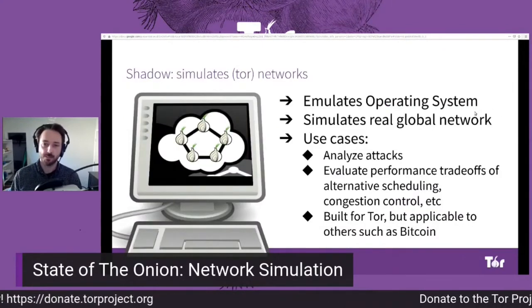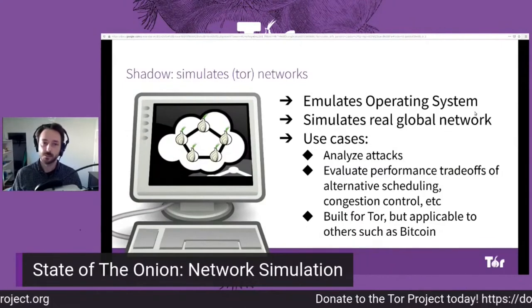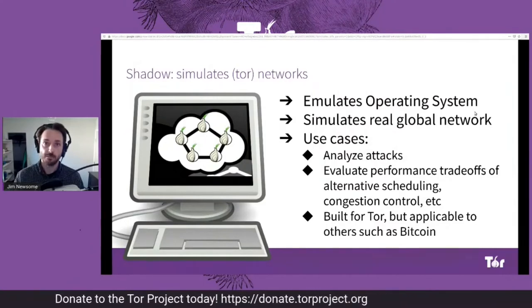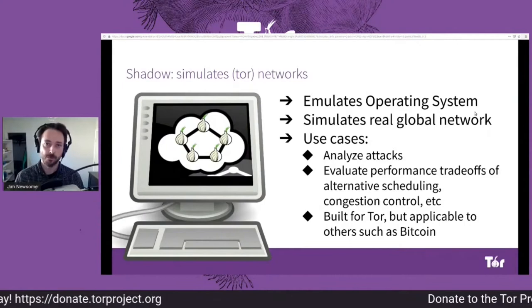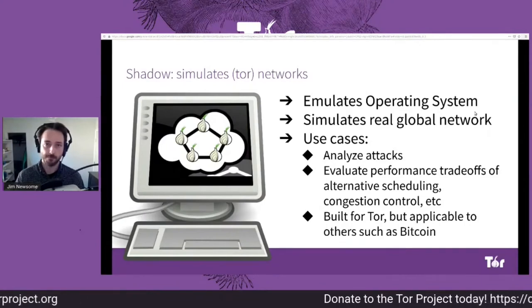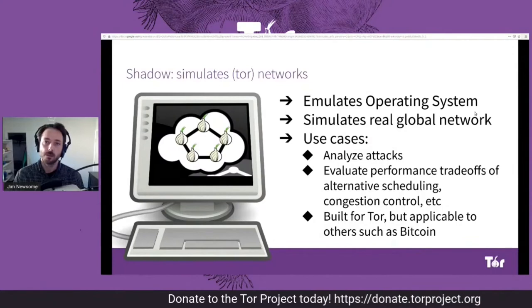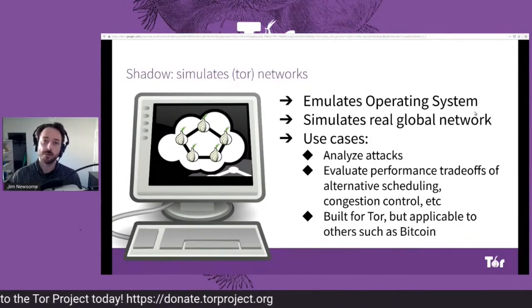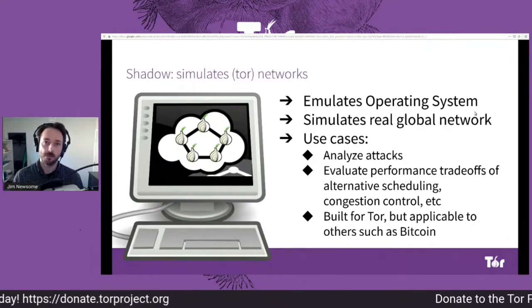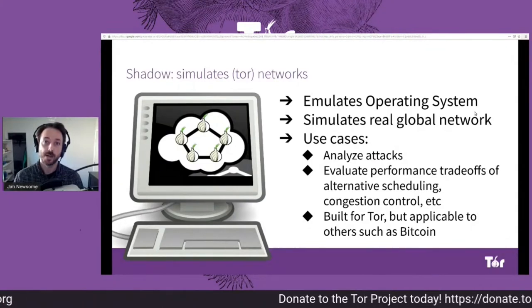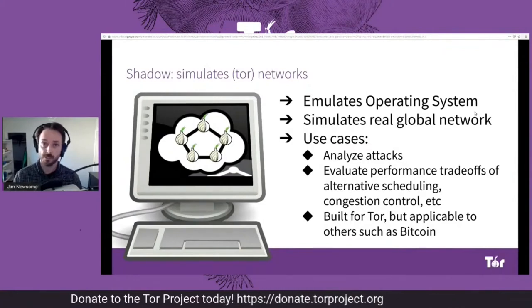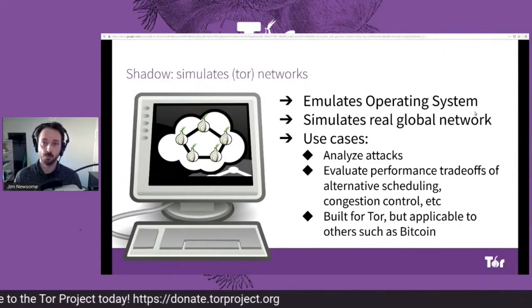A little background on the Shadow Simulator. This is a tool for simulating the Tor network. It works by running the real Tor software in an emulated environment where we intercept every system call into the operating system and return an emulated result. When the application tries to communicate with the network, we feed that through a model of the network that provides realistic latency, bandwidth, and packet loss that you would see in a real global Tor network.